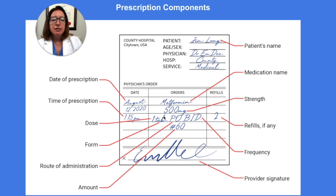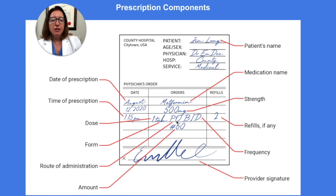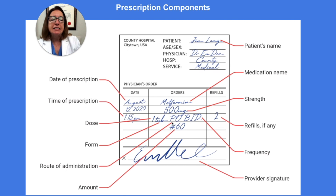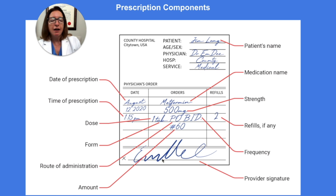Then we have the dose — the amount of the medication the patient should take each time. In this case, they need to take one tablet each time. We have the route of administration, which is PO, meaning the patient needs to take it orally. We have the frequency, which is BID — twice a day. We have the amount, indicated by a pound sign — pound 60 — meaning 60 tablets will be supplied to the patient. And then we have two refills available, and at the bottom, the provider signature. These are the key components of a prescription.